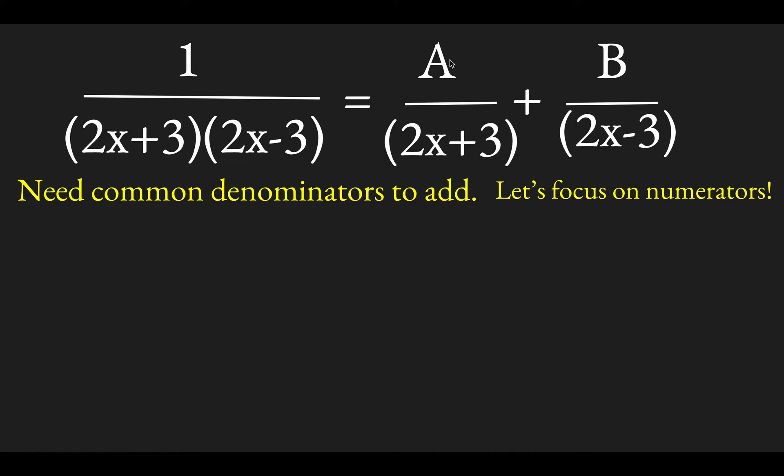So for instance, if you notice this first term here, a over 2x plus 3, to get a common denominator so we can add these things, we're going to have to multiply this fraction on the left by 2x minus 3 over 2x minus 3. So what we've got is 1 on the left, and then here notice we've taken a times 2x minus 3.